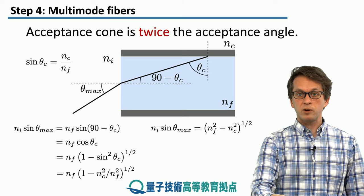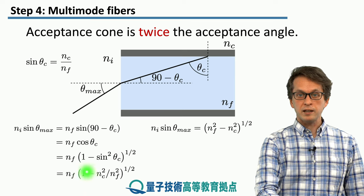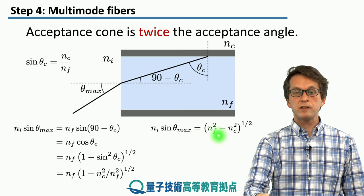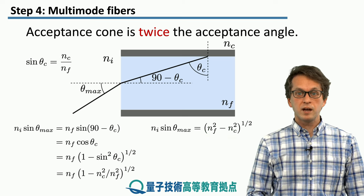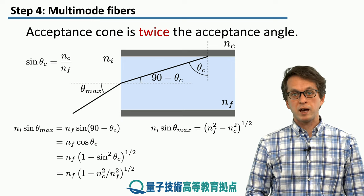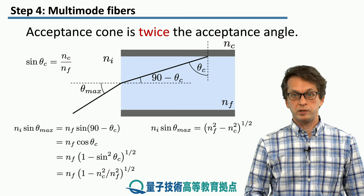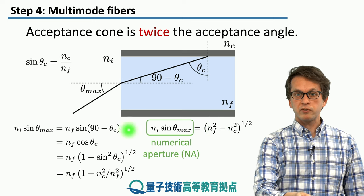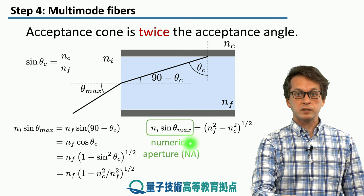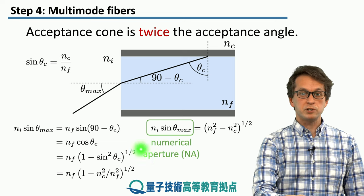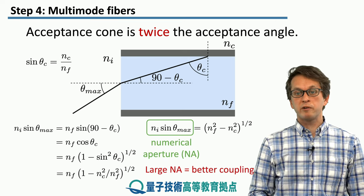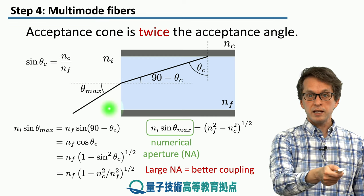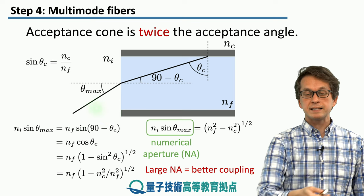Finally, multiplying through by NF, we get: NI × sine(theta_max) = sqrt(NF² − NC²). This gives us theta_max, the maximum angle of acceptance, and therefore the cone of acceptance. This product — the refractive index times the sine of the maximum acceptance angle — is known as the numerical aperture. The higher the numerical aperture, the better we can couple to the fiber, meaning theta_max is allowed to be larger.